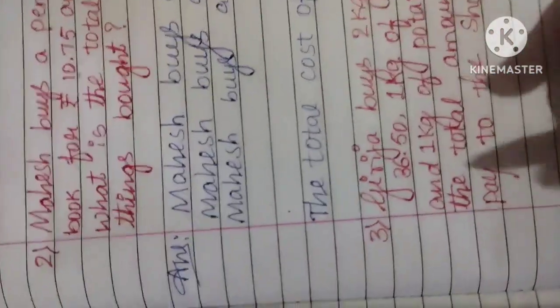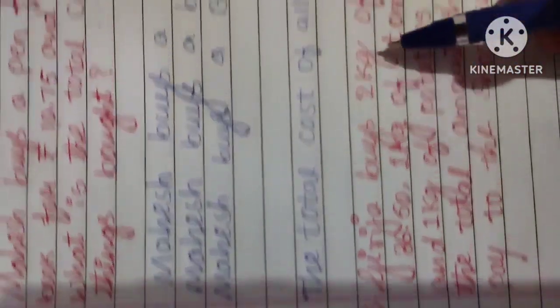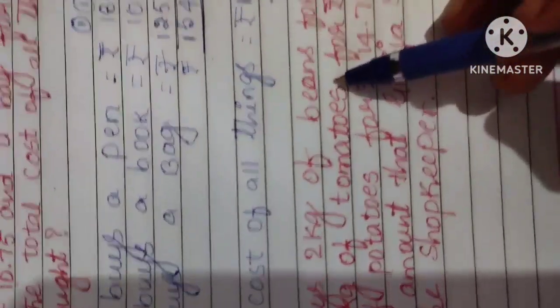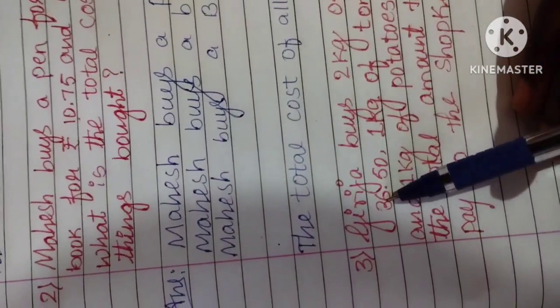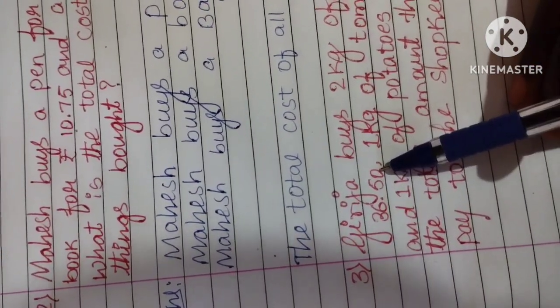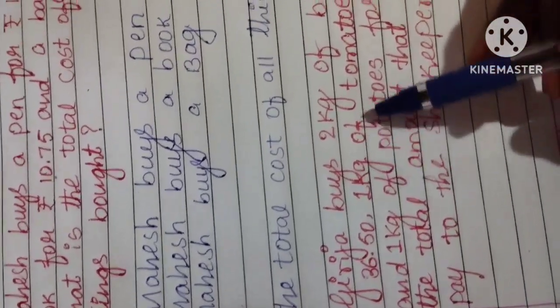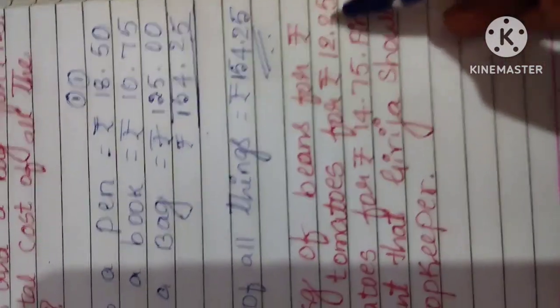Next, we have the third question. Geraja buys 2 kg of beans for Rs. 36.50, 1 kg of tomatoes for Rs. 12.25.